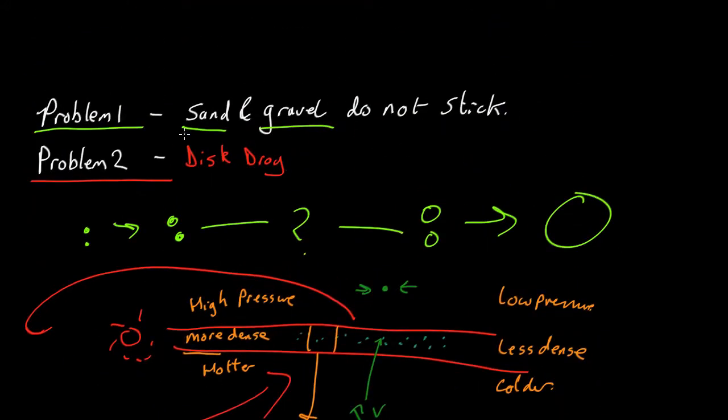So, problem number one, the sand and gravel do not stick, so you can form subatomic particles up to the size of gravel, but then nothing should happen then. If you do make it up to the size of boulders, it should fall into the sun pretty fast. Problem number two, somehow we have to get over these two problems, get things up to the size of mountains, and then we can let them collide together and go all the way up to the size of planets.